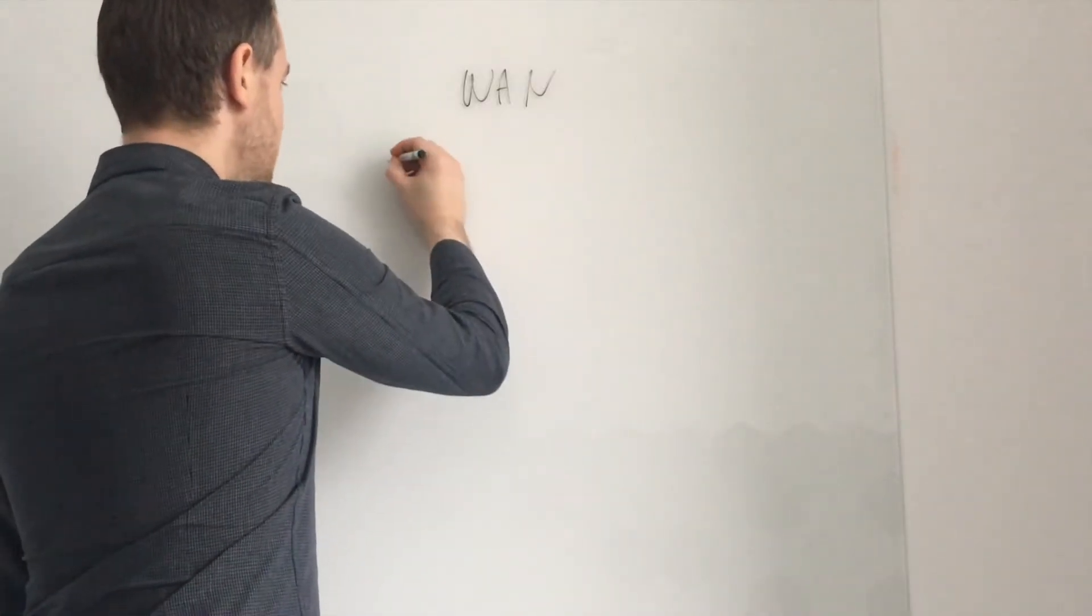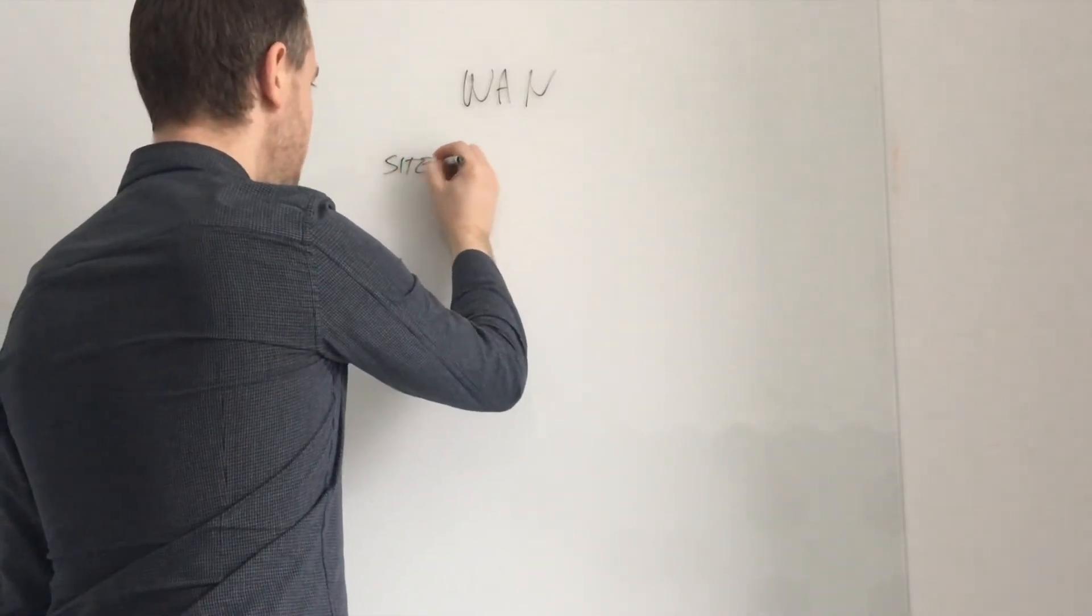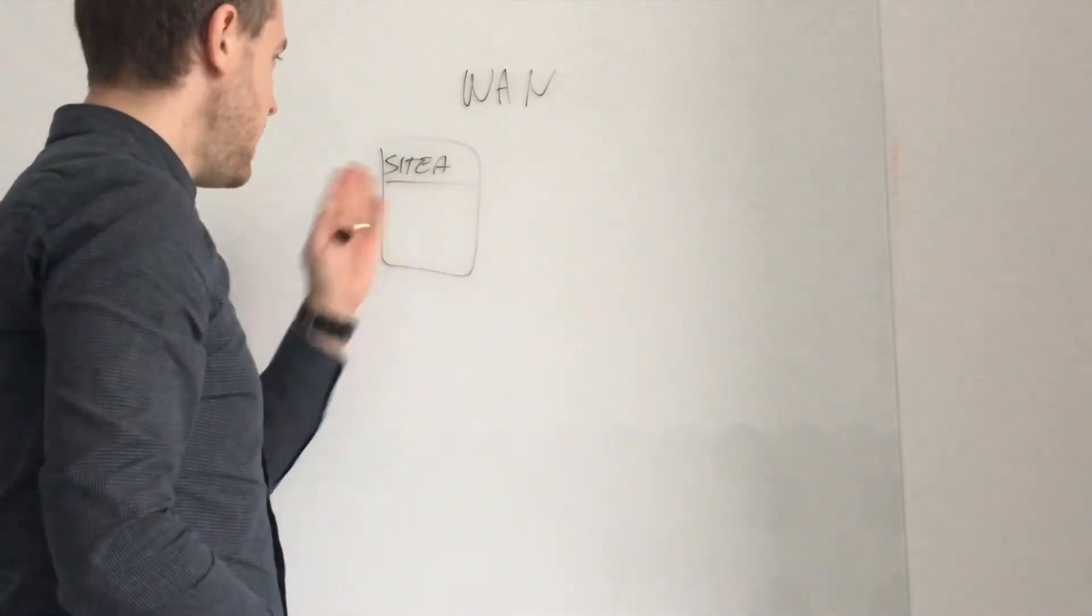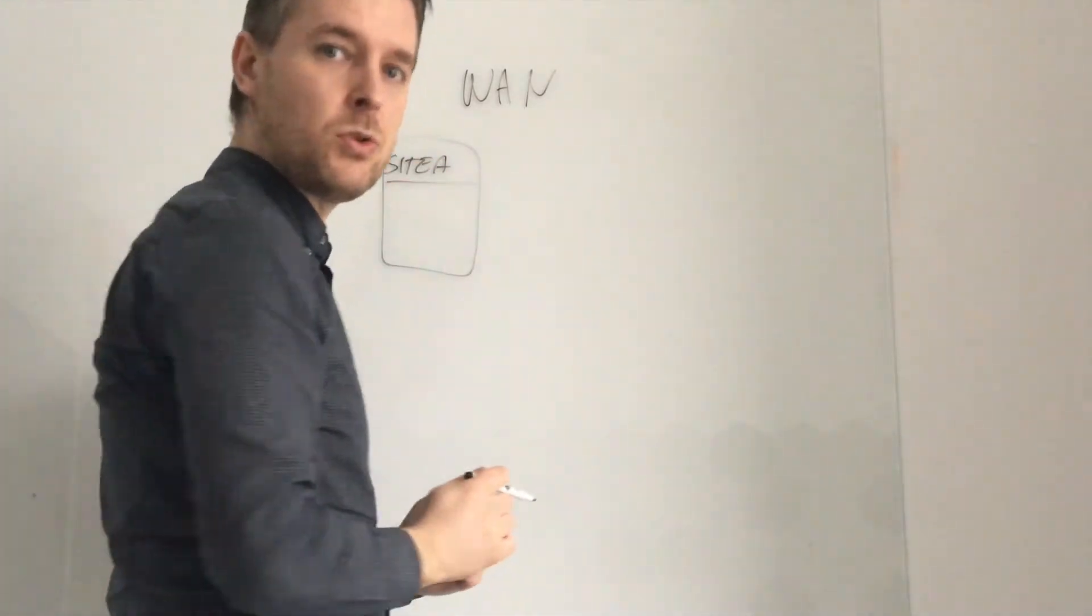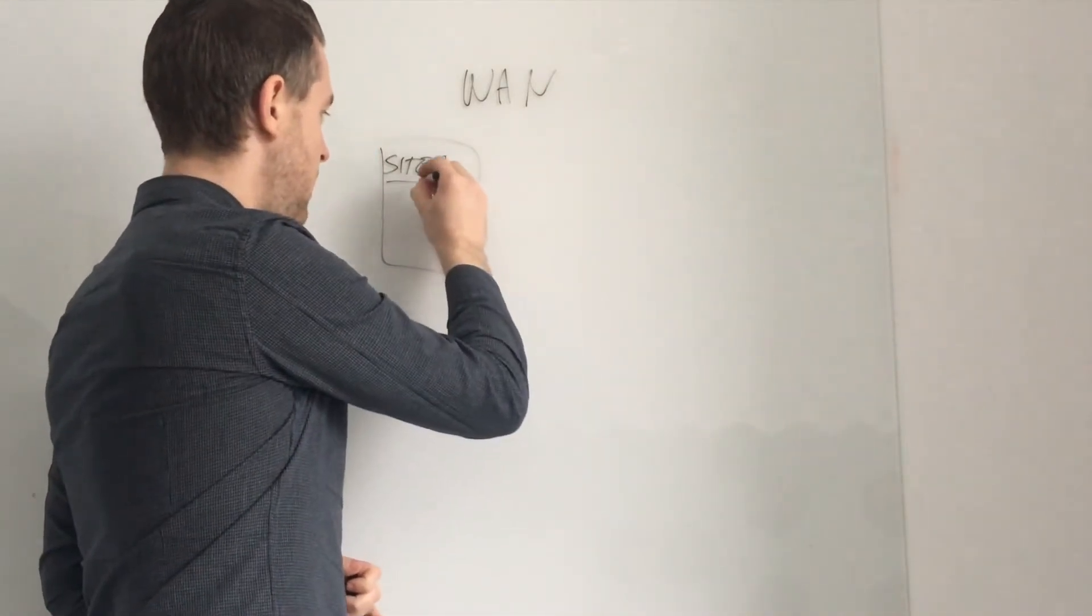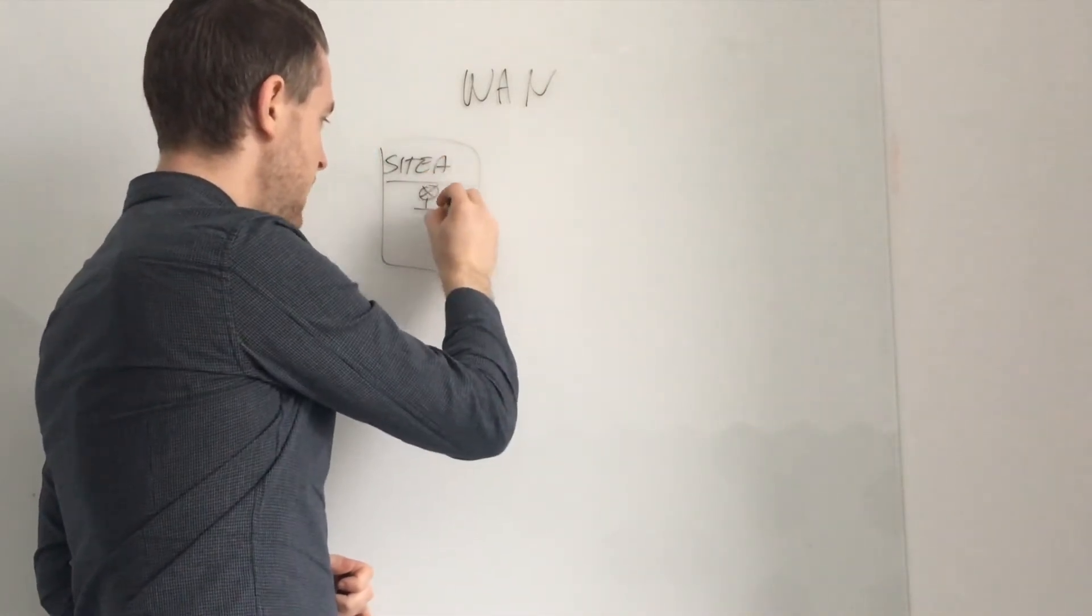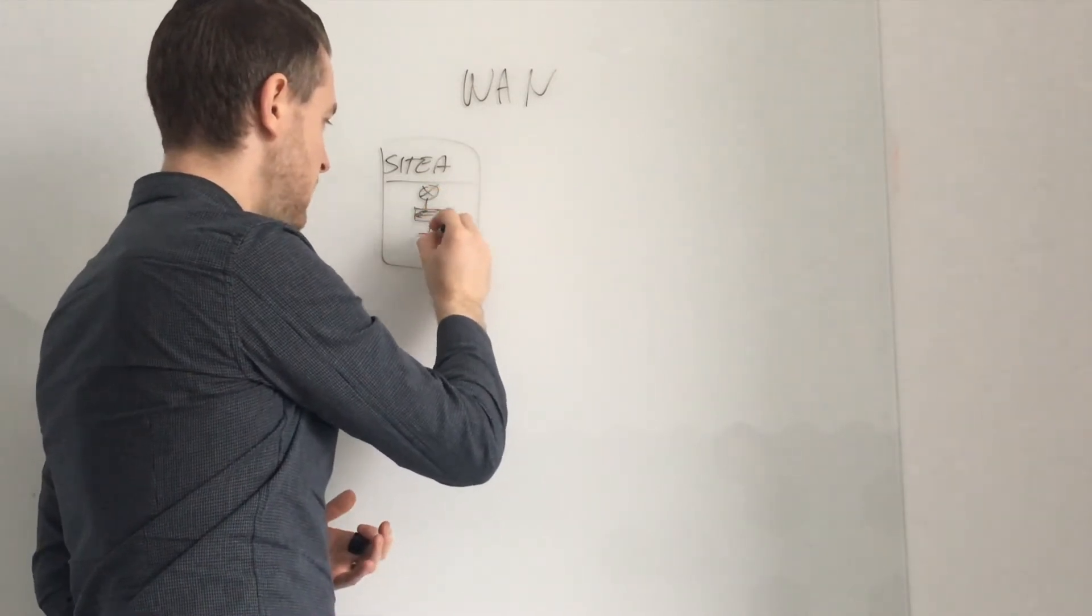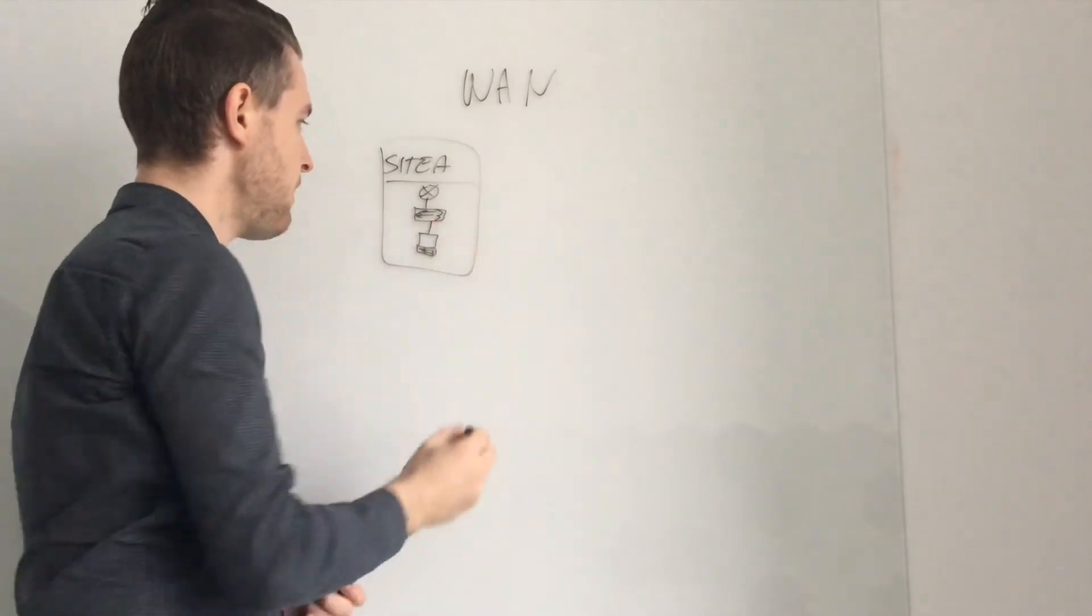So we've got a site, site A. Now this site in turn would have a number of different sorts of devices within it. So site A would have a router connected to some switches and then in turn connected to some computers.